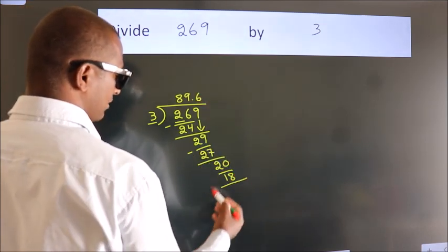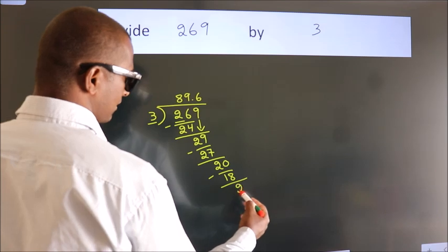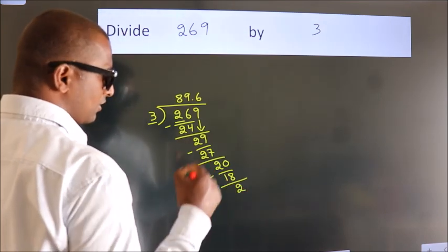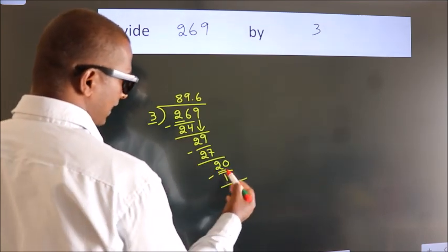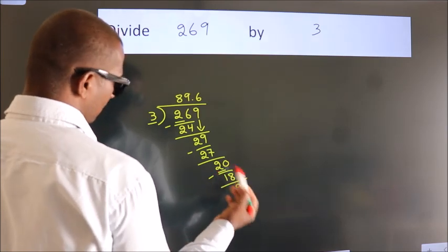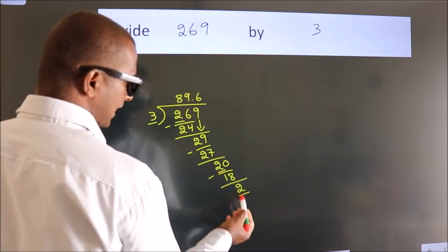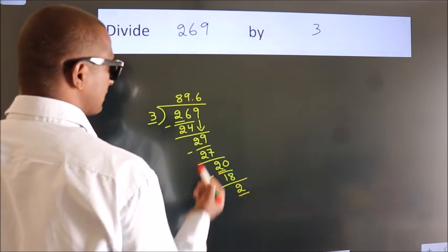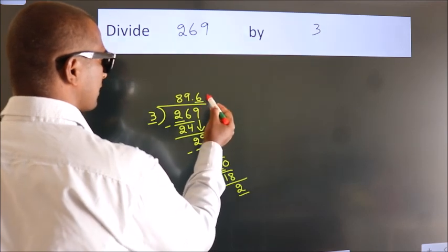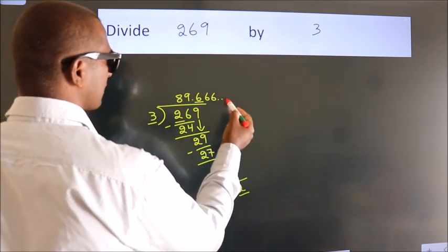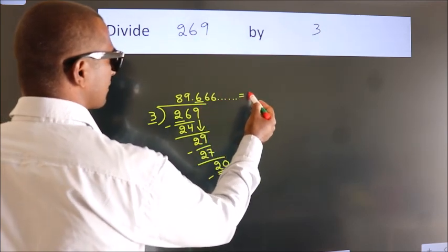Now we subtract, we get 2. Now you observe, we had 2 here and we got 2 again. That means this number keeps on repeating. So this is our answer.